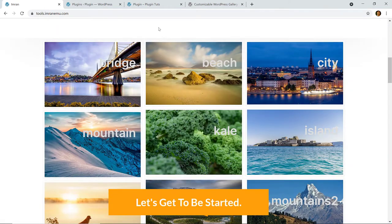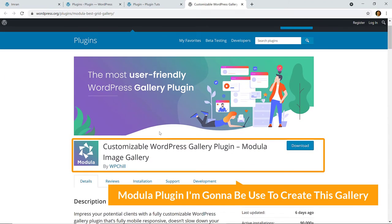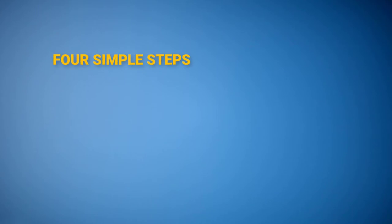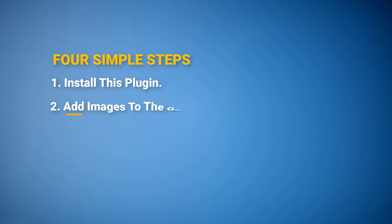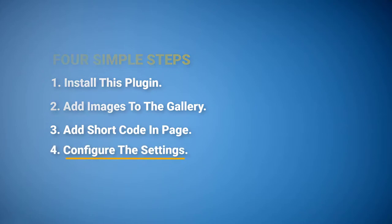Here is the plugin I'm going to use to create this gallery, and I will create this gallery in four simple steps: firstly I'll install this plugin, secondly I'll add images to the gallery, then I'll add the shortcode in a page, and then I'll configure the settings.